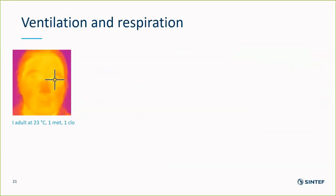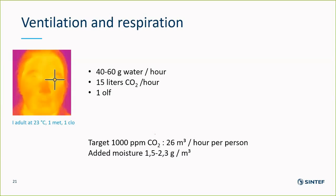Respiration is a free source of moisture. My colleague Kari, wearing one met and one clove, will probably evaporate about 40 to 60 grams of water per hour, along with 15 liters of CO2 and one olfactory unit. So if we ventilate to achieve a CO2 level at 1000 ppm, we will perhaps be able to add 1.5 or a little more grams per cubic meter to the air, which will increase the moisture level without obviously impairing the indoor air quality.